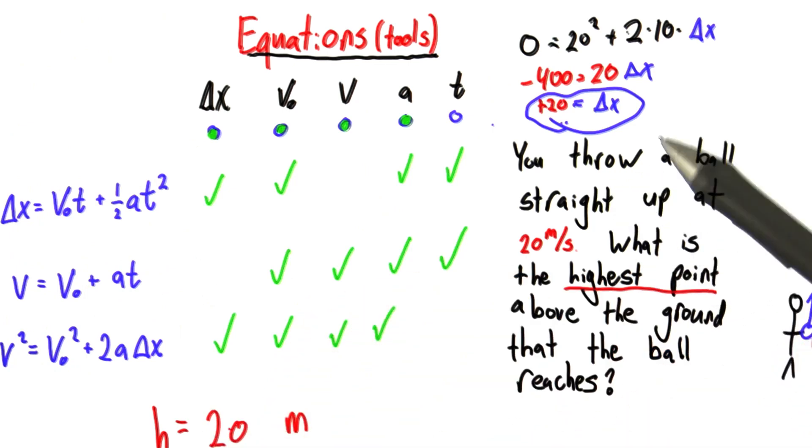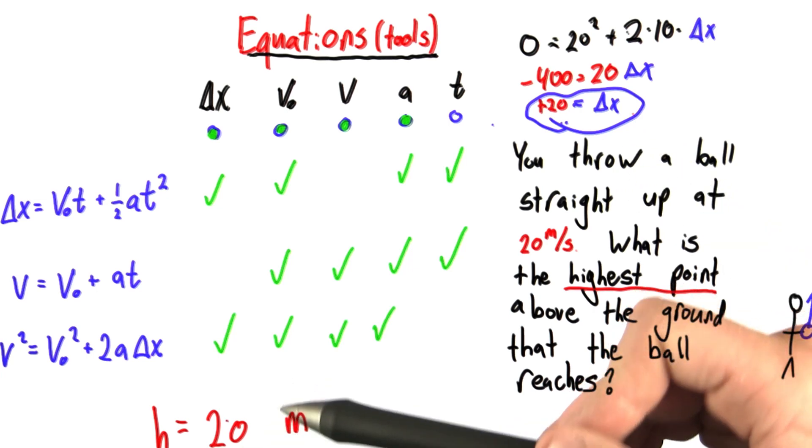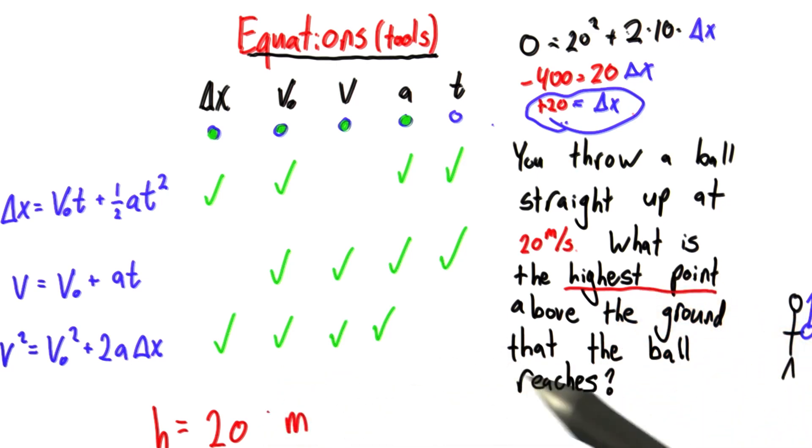Remember whenever you make a calculation in physics, you are calculating something about the real world. If your number doesn't make sense in the real world, you did something wrong. This is nice, because it's a built-in sanity check. We can always check to see that our number isn't totally crazy. And we know if it is totally crazy, we made a mistake.